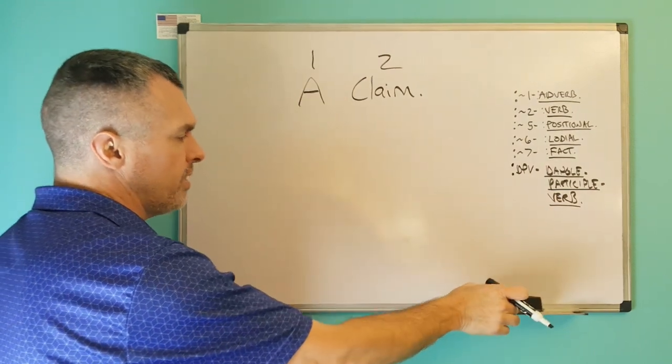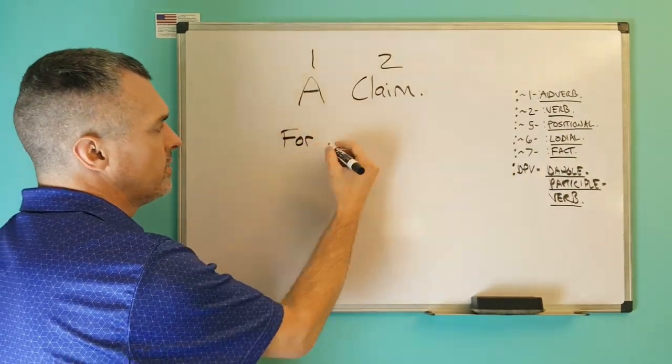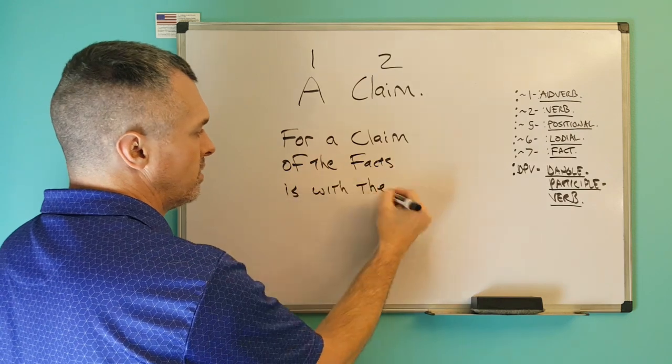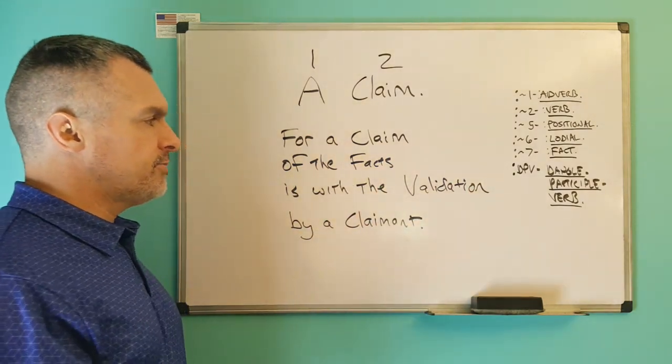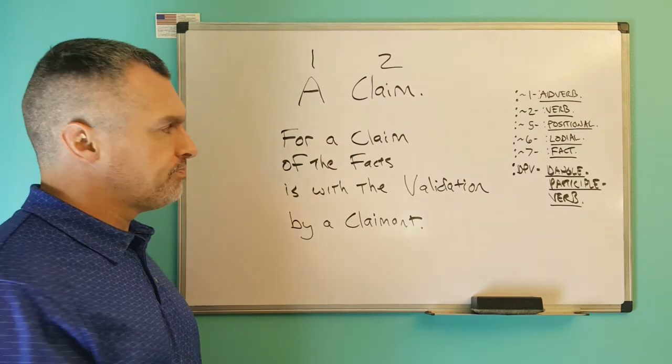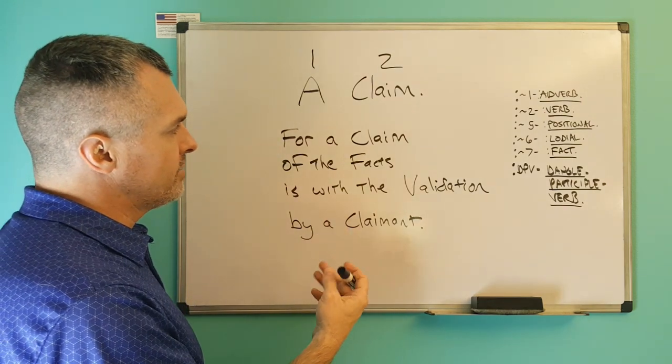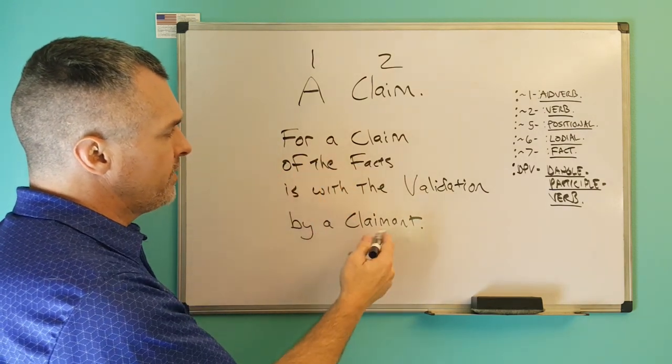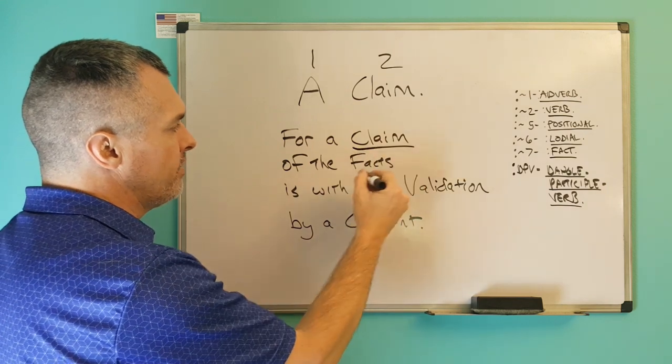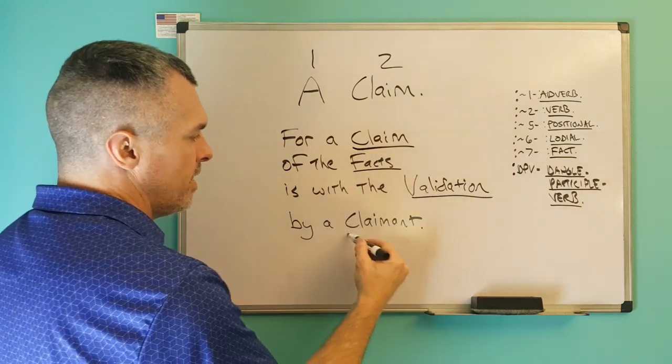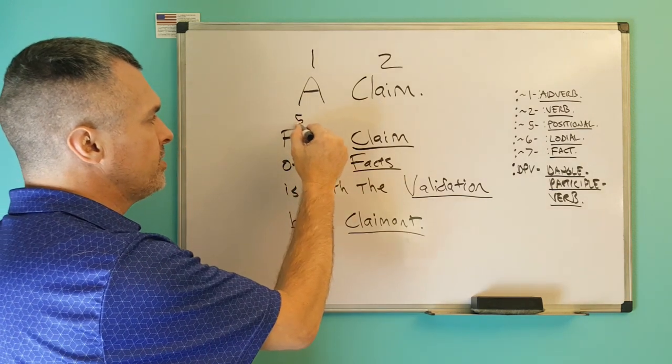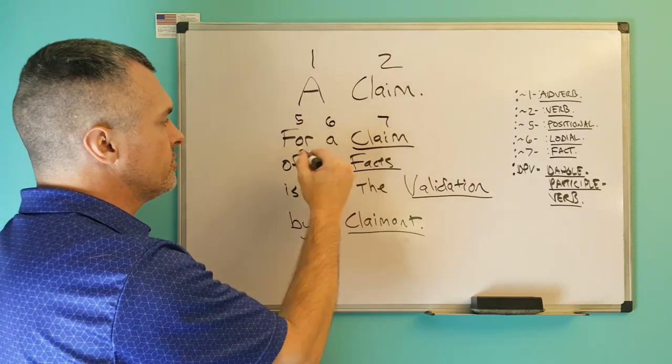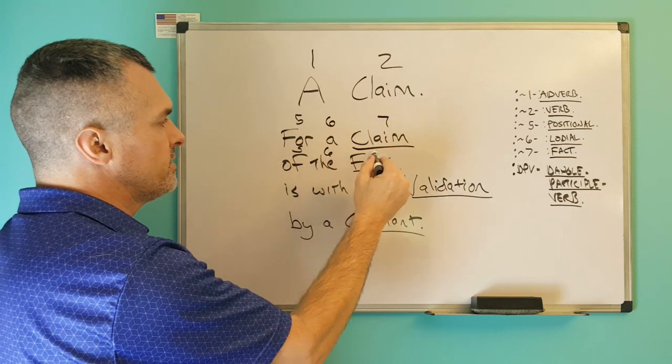Now, you can make a correct sentence structure. For a claim of the facts is with the validation by a claimant. That's a correct sentence structure. All of these facts, and I'll underline the facts, the facts, have been positioned correctly, because they have positionals and lonials setting them up.